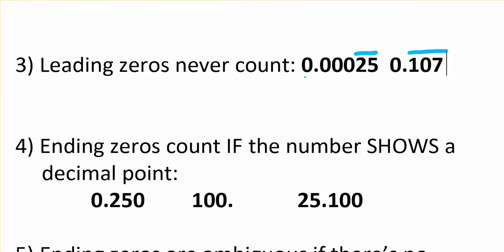Ending zeros count if the number shows a decimal point. If you see the dot, you have to actually see the dot. There it is. Then ending zeros count. So these three count. Leading zeros never count. This ending zero counts. This looks kind of funny, 100 dot. Well that dot makes these digits significant, so it's important. And then of course all of these are significant.